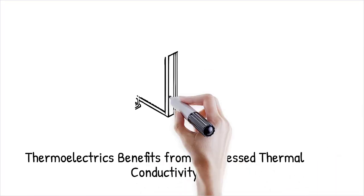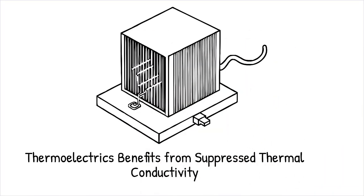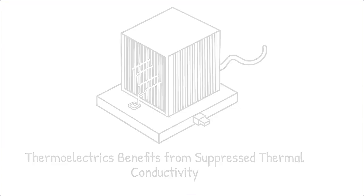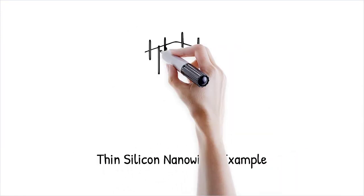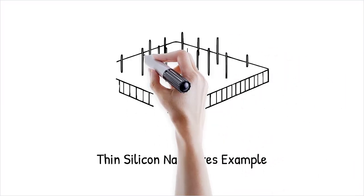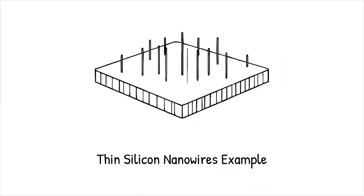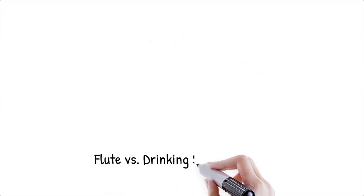Thin silicon nanowires with diameters below 50 nm exhibit thermal conductivities several orders of magnitude lower than bulk silicon due to surface scattering and phonon boundary reflections. It's like a flute that still plays music, but when narrowed to a drinking straw, its ability to carry air, and thus sound, is severely limited.